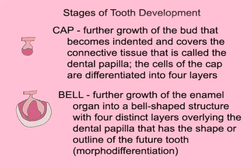The cap stage has further growth of the bud that becomes indented and covers the connective tissue, which is called the dental papilla. The cells of the cap are differentiated into four layers. The bell stage has more growth of the enamel organ and presents as a bell shape with four distinct layers.